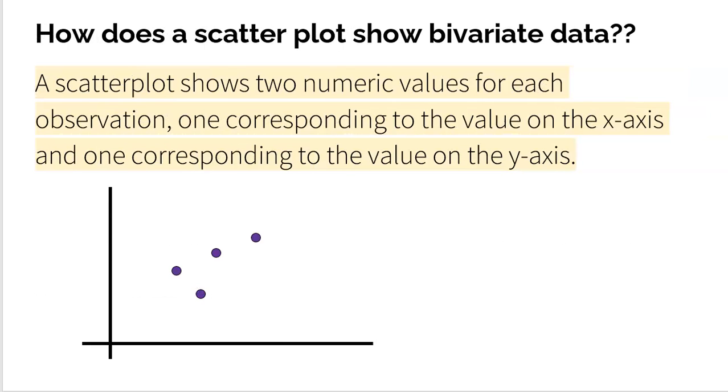Now, a scatterplot does show the bivariate data. It's a great way to show the bivariate data. So a scatterplot shows the two numerical values for each observation, one corresponding to the value on the x, and the other corresponding to the value on the y.